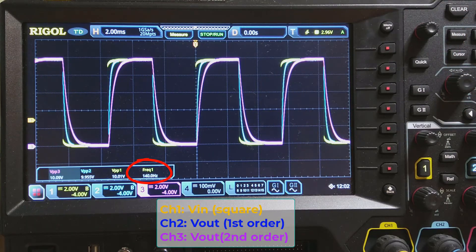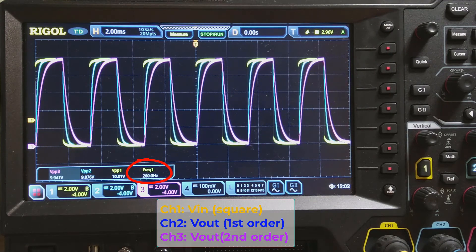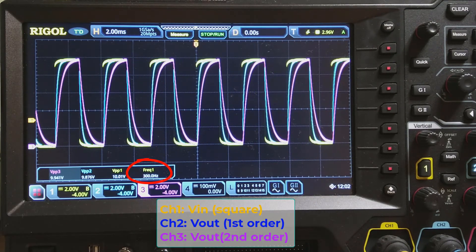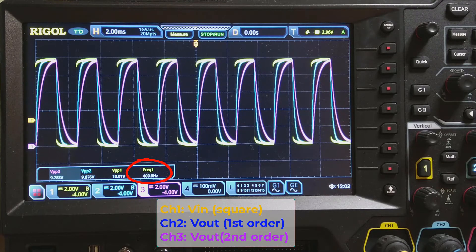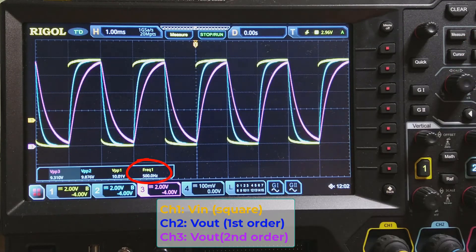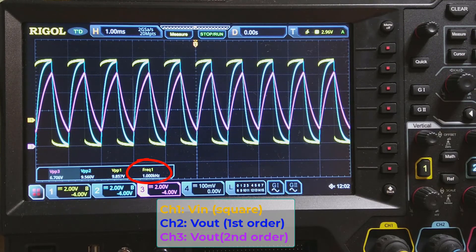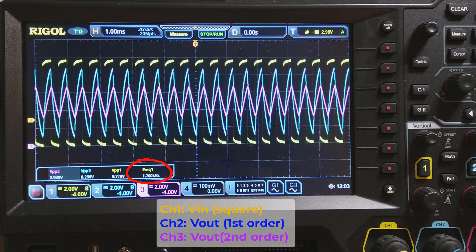I keep increasing the input frequency. The low-pass filter becomes more lagging than the input, and it cannot follow the input change instantaneously. Channel 3 has more lagging than channel 2. Another way to look at this is that channel 3 has much more time constant, and it is much slower than channel 2.